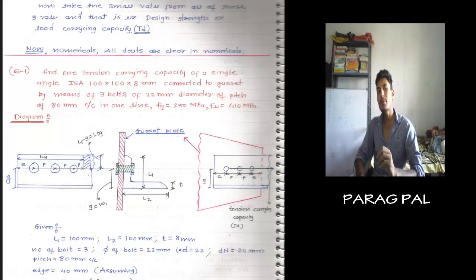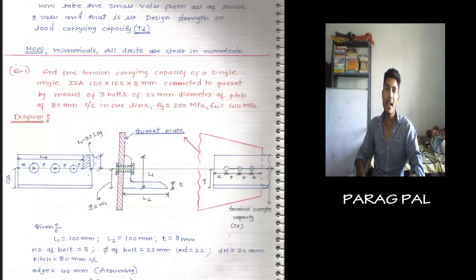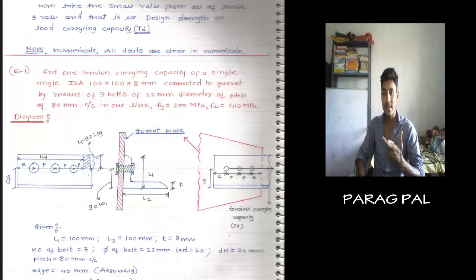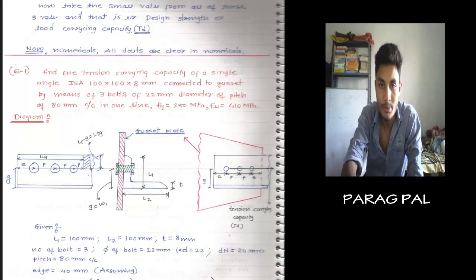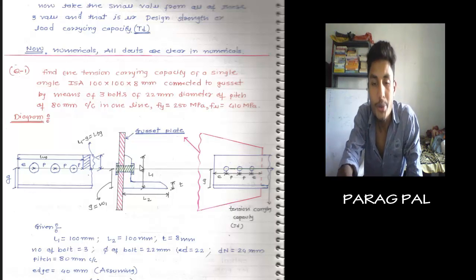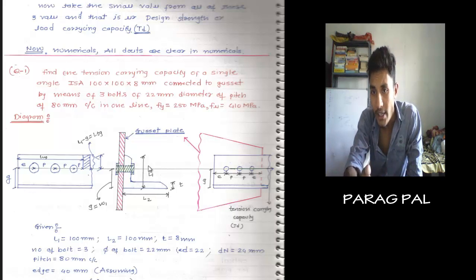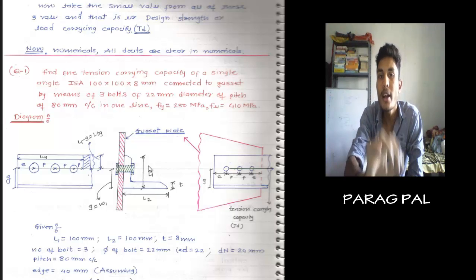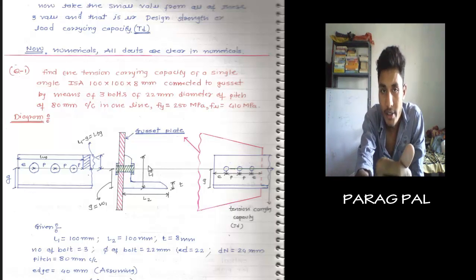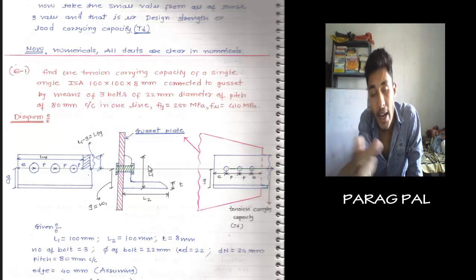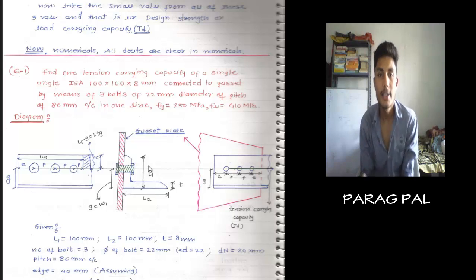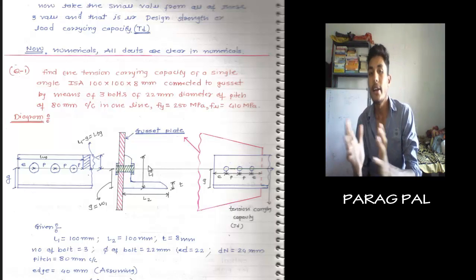You have to determine the tension carrying capacity of a single angle ISA 100 by 100 by 8. Here 100 is L1 as shown in the diagram. L1 is the length of one leg of the equal angle. So for 100 by 100 by 8: L1 is 100, L2 is 100, and T means thickness, which is 8.